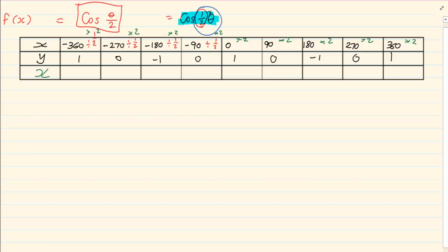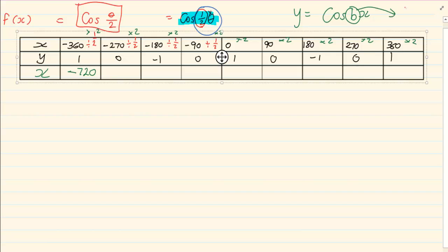Minus 360 divided by half is the exact same thing as saying minus 360 times 2. However you want to look at it, the idea is: if I am busy with that adjustment, it is always affecting my x. What does it do to my x? It multiplies or divides. But x works opposite. So if I have a relationship of multiplication, then I am going to divide. If I have a relationship of divide, then I am going to multiply.